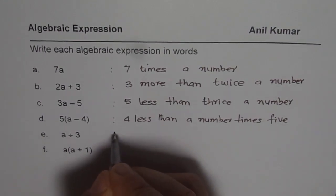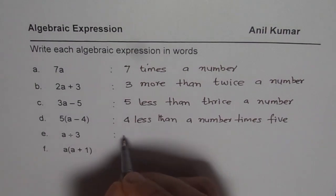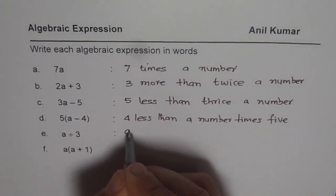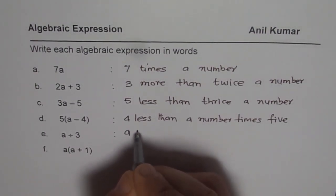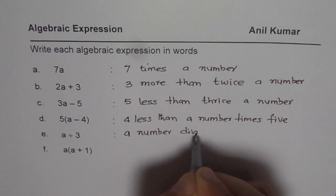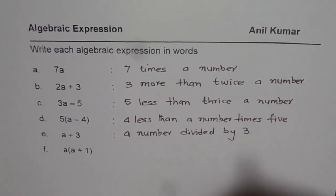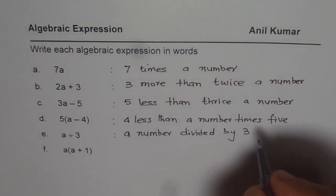a divided by 3. So we could say a divided by 3, so you could say a number divided by 3. So that is literal translation. You could say one third of a number.